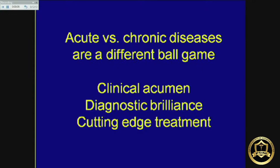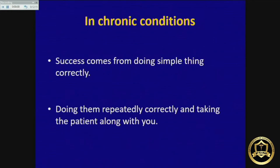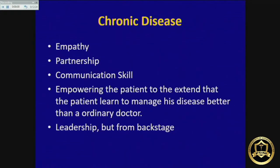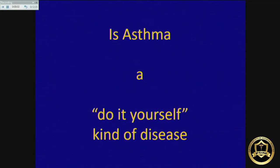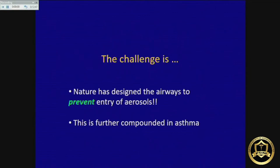Treatment of acute and chronic illness is different. In acute illness you need clinical acumen and cutting-edge treatment. In chronic illness, success comes from doing simple things correctly, doing them repeatedly, and taking the patient along with you. Asthma is a do-it-yourself kind of disease. Two simple statements: drugs work where they reach, and drugs only work for those who take them.